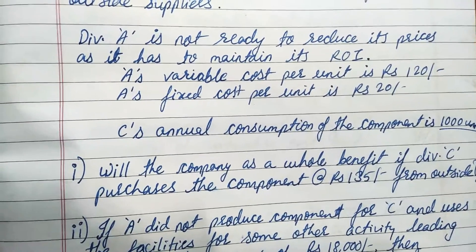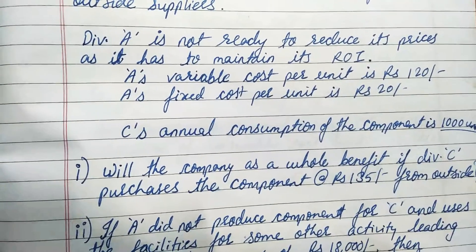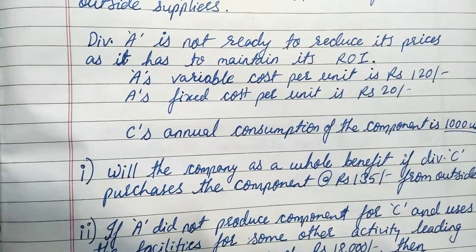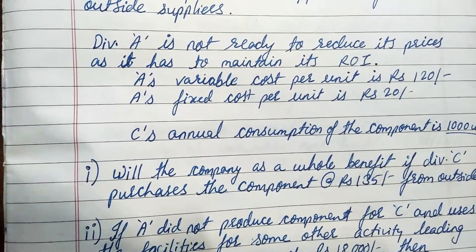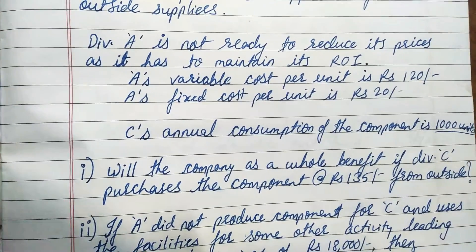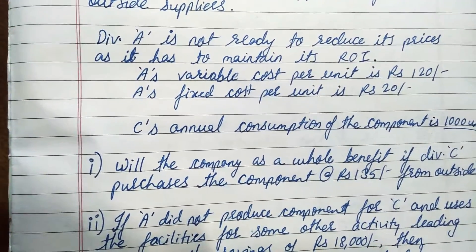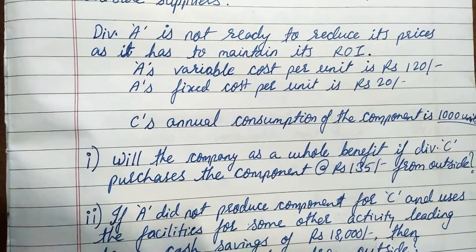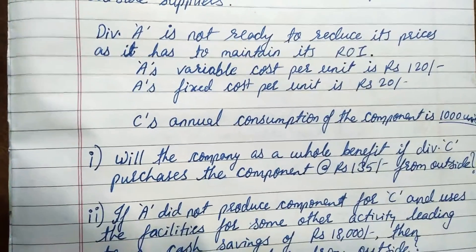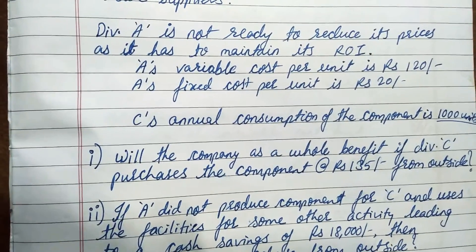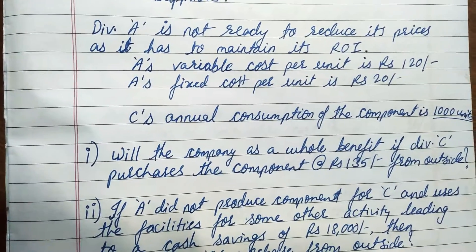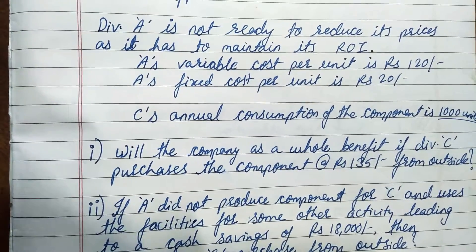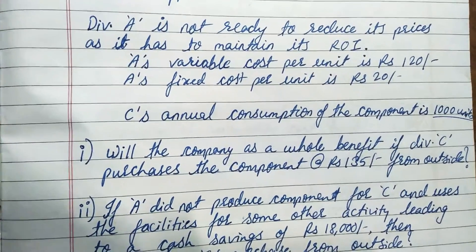If you look at the details of division A: its variable cost per unit is 120 rupees and its fixed cost per unit is 20 rupees, so the total cost of A comes to 140 rupees. It is therefore not possible for A to sell at 135 rupees. C's annual consumption of the component is 1000 units every year.